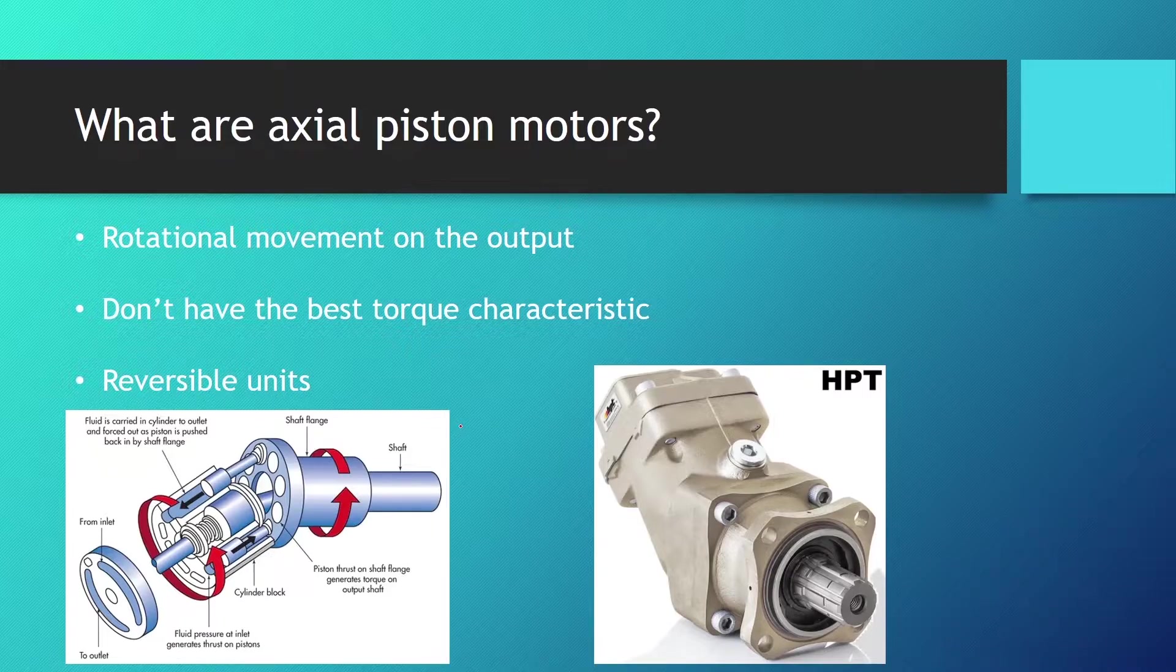Axial piston motors don't have the best torque characteristics. In spite of this they are one of the most used hydraulic motors. These units have very high specific power, which is basically the mass divided by the power of the motor.